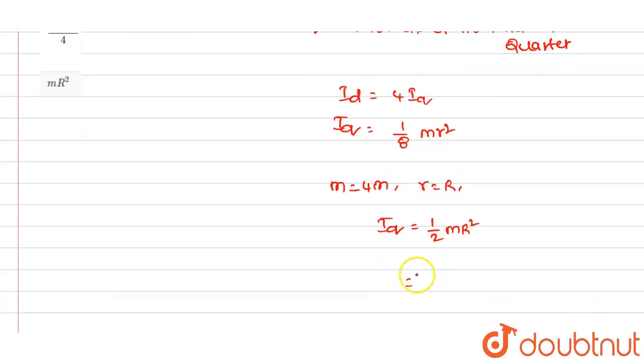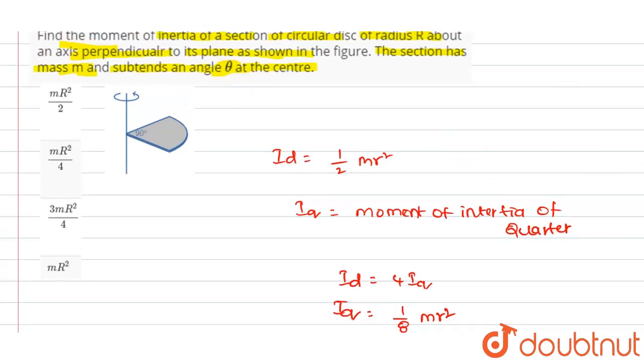We can rewrite this value as Iq equals mR squared divided by 2. Out of these four options, we have option A as mR squared divided by 2, so option A is the correct answer for this question. Thank you.